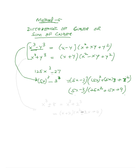For sum of cubes, consider x³ + 8. Since 8 = 2³, we have a sum of two cubes. Using the sum of cubes formula: (x + 2)(x² - 2x + 4). Notice: with a plus sign between the cubes, the middle term in the trinomial factor is negative. With a minus sign (difference of cubes), all terms in the trinomial factor are positive, but the first binomial factor carries the negative sign.